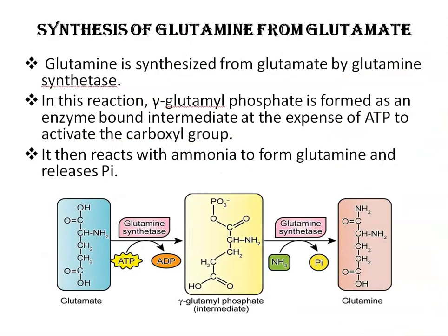Glutamine is synthesized from glutamate by the enzyme glutamine synthetase. In this reaction, gamma-glutamyl phosphate is formed as an enzyme-bound intermediate at the expense of ATP. ATP is required to activate the carboxylic group. This intermediate then reacts with ammonia to form glutamine, with release of an inorganic phosphate group.